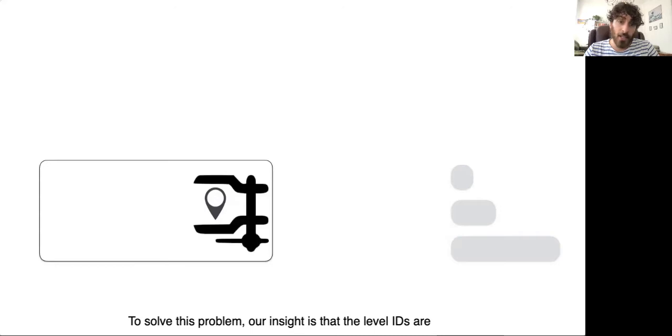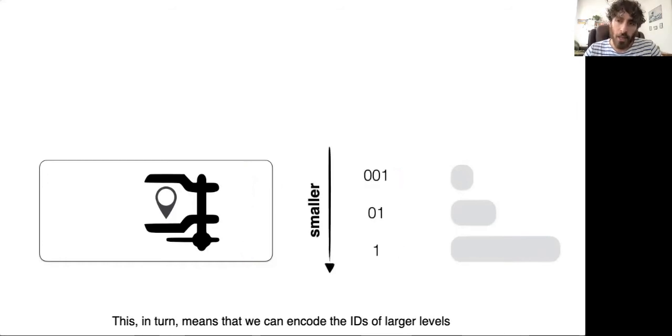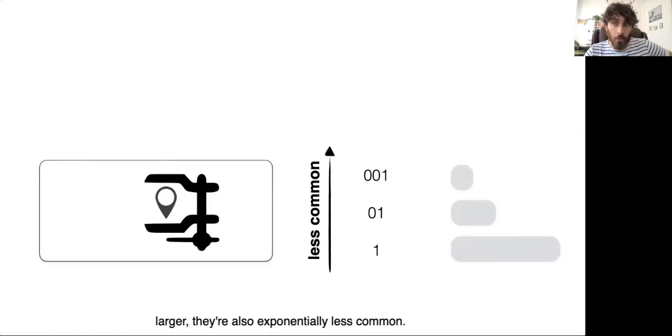To solve this problem, our insight is that the level IDs are extremely compressible. The reason for this is that the distribution of level IDs within the hash table is extremely skewed because most entries in the LSM-Tree reside at the largest level, while exponentially fewer reside at smaller levels. This in turn means that we can encode the IDs of larger levels with fewer bits.